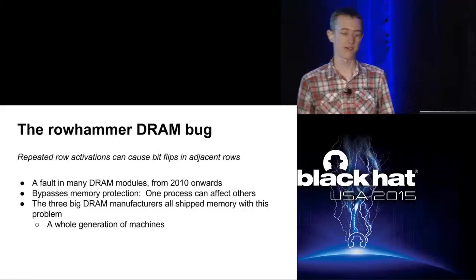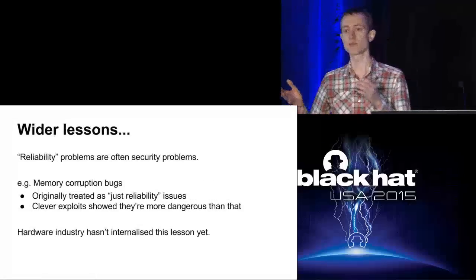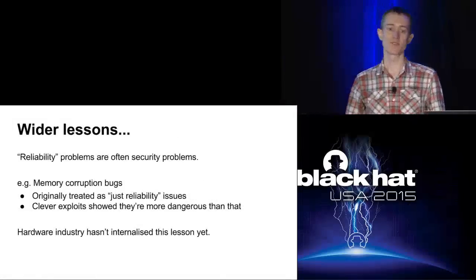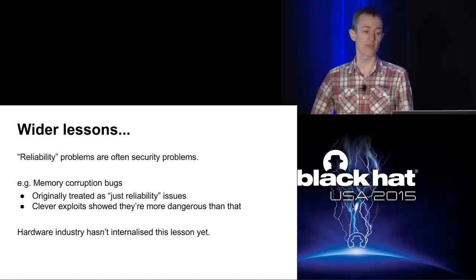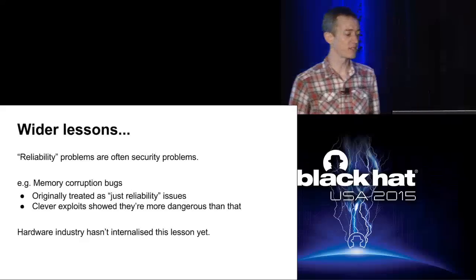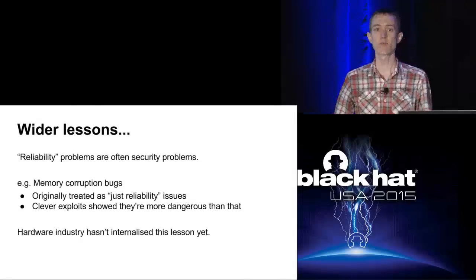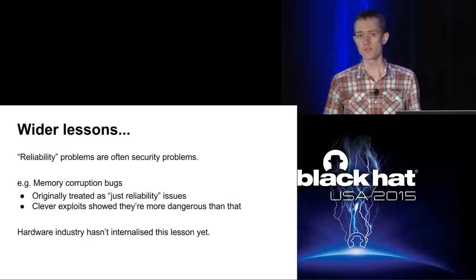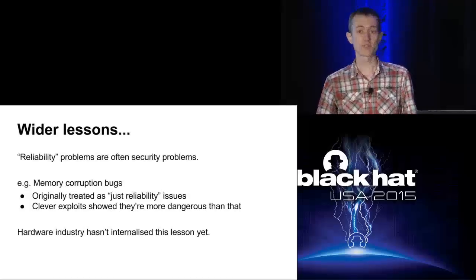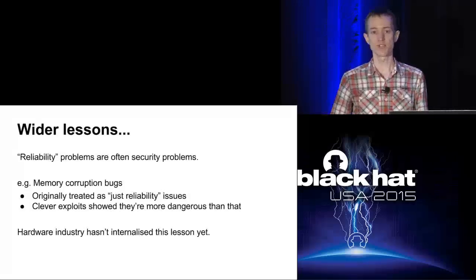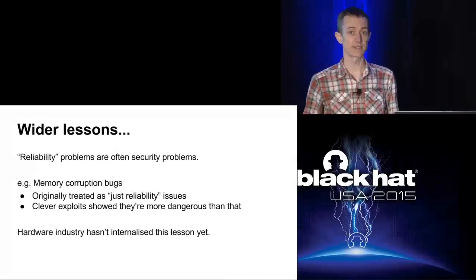There's a whole generation of machines out there prone to this problem. But this talk isn't just about one bug - it's also about the connection between reliability and security. In the past, memory corruption bugs and crashes were often treated as just reliability issues, but people started coming up with increasingly clever ways to exploit those bugs. The software industry has gradually been realizing these aren't just reliability issues, but a lot of the hardware industry hasn't caught up yet, based on how they responded to the row hammer bug.